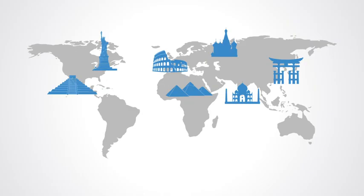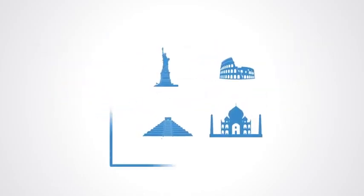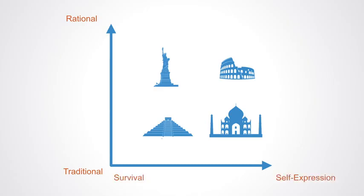The global cultural map shows where societies are located along two dimensions. Moving upward on this map reflects the shift from traditional values to secular rational, while moving rightward reflects the shift from survival values to self-expression values.